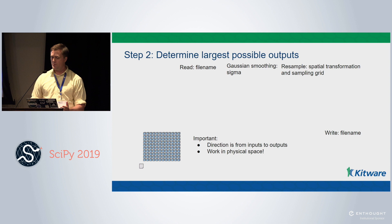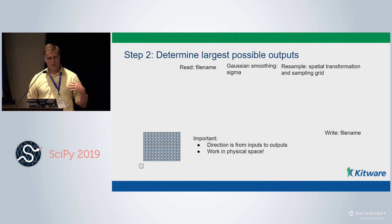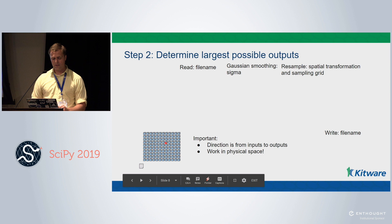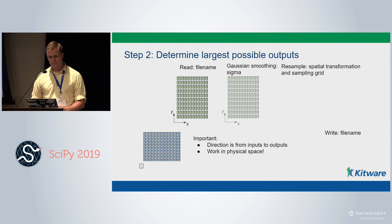Step two: we need to figure out the largest possible outputs. Our goal is to determine what the end image we want to compute looks like. We start with the input data — represented on a grid on disk — then figure out from the metadata where that input data is in physical space and what the largest possible image that could be created from that data is.